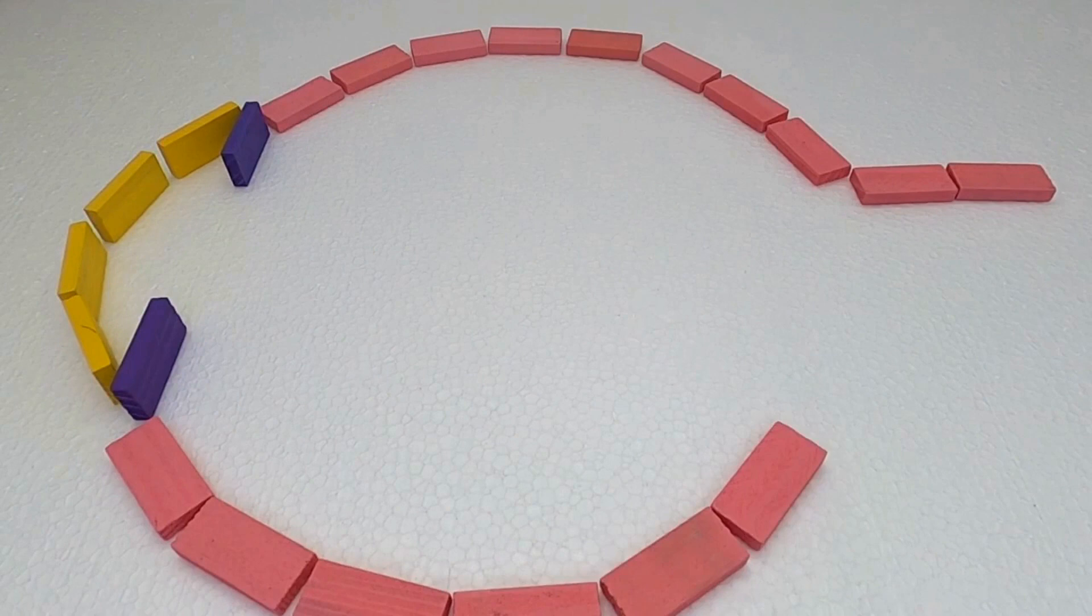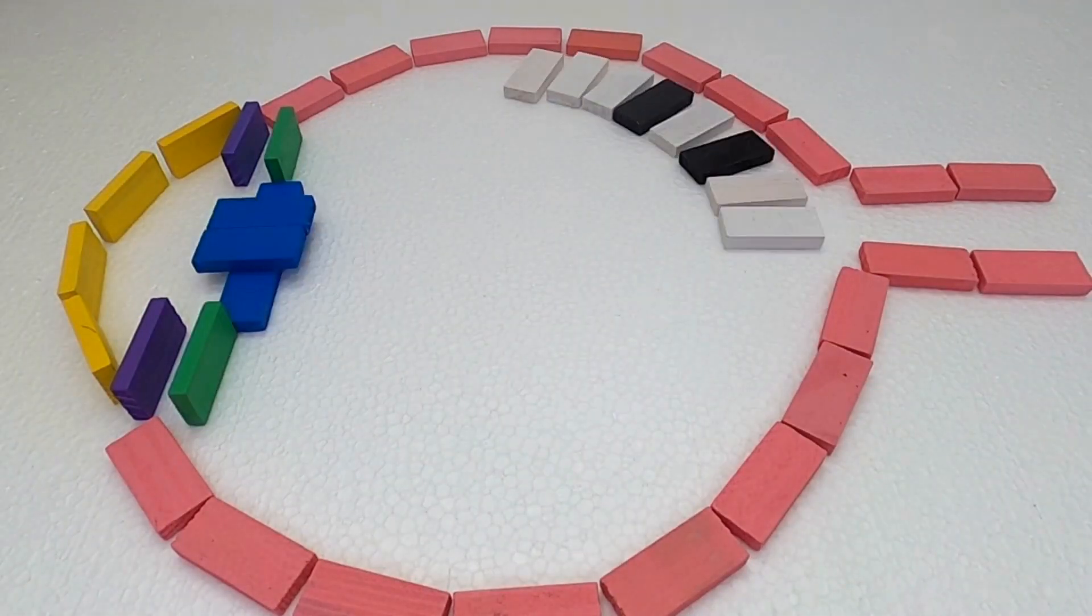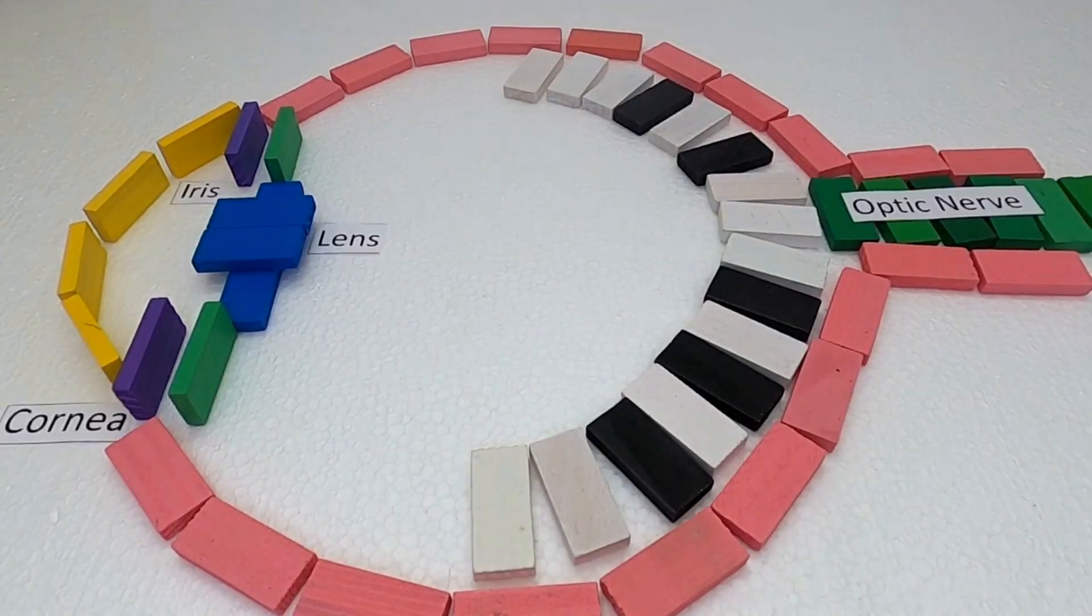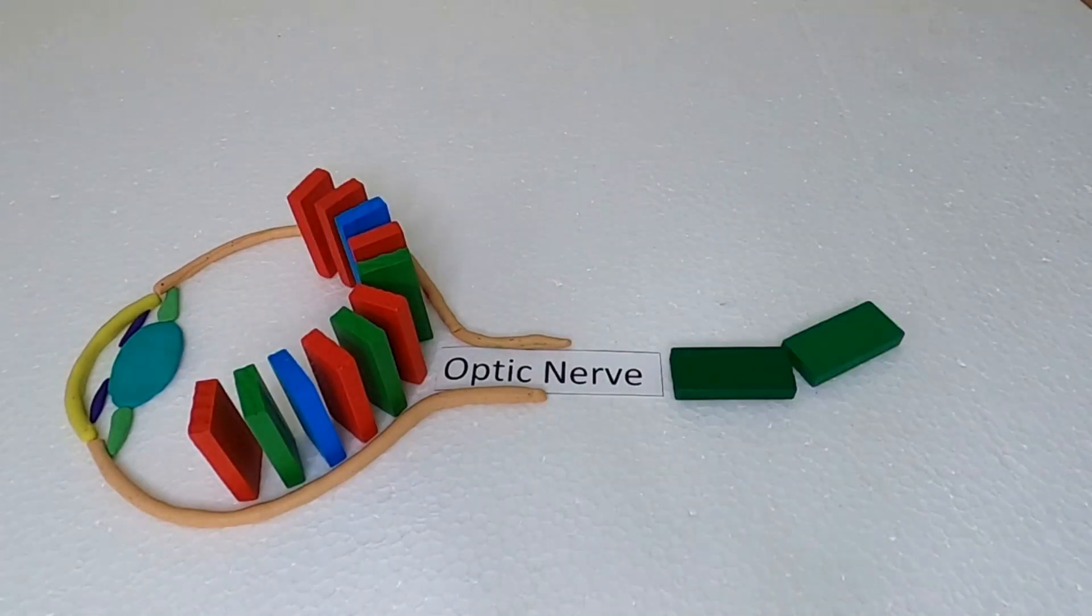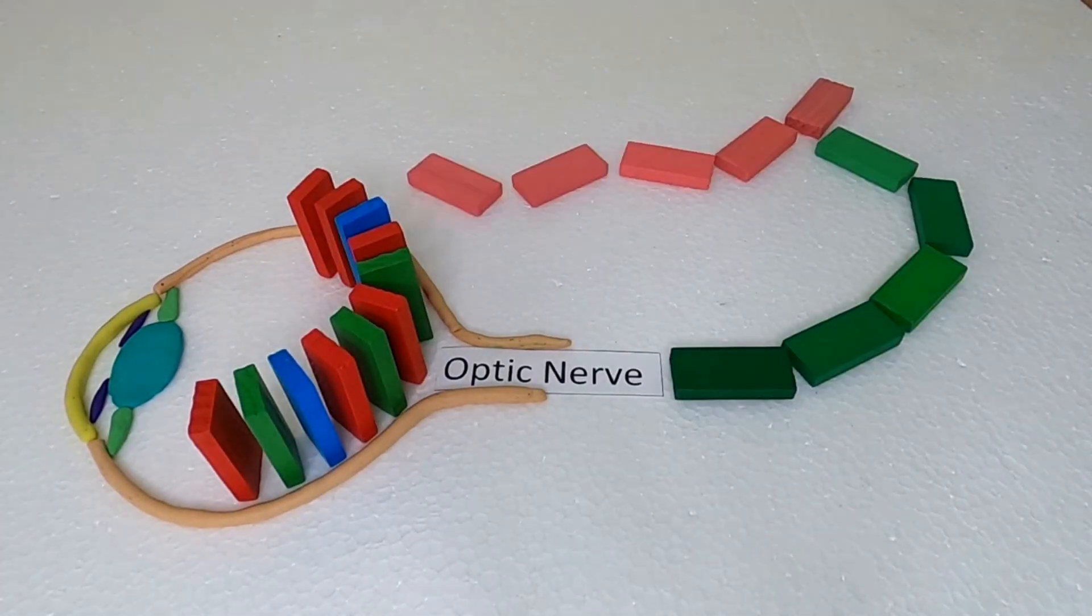The retina is at the back of your eye and it has photoreceptors or light-sensitive cells called rods and cones. When you look at something, light hits the retina, then rods and cones send electrical signals to your brain along the optic nerve. The brain then uses these signals to understand what you're seeing.